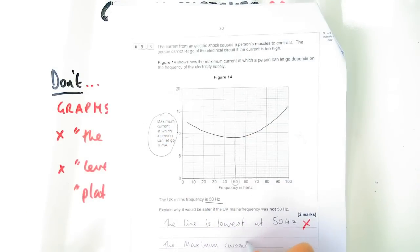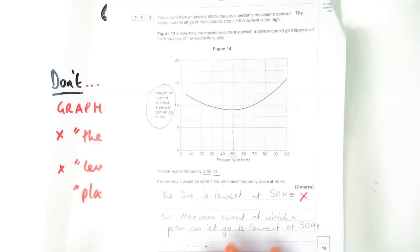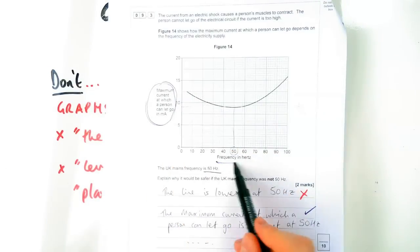It talks about the maximum current at which a person can let go. So even though they'll take you a little bit of time to write out, that is what will come up on the mark scheme for describing what's going on. So you don't say the graph or the line. Here you'd say the maximum current is lowest at about 50 hertz.